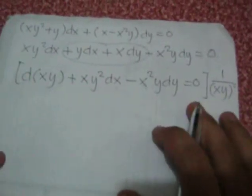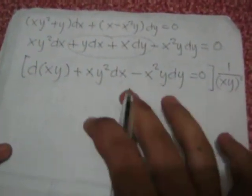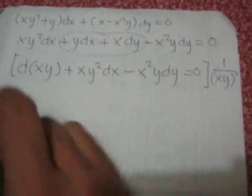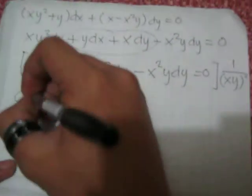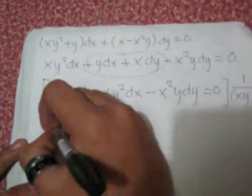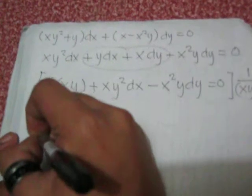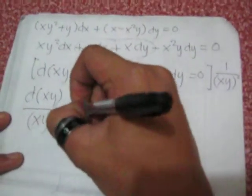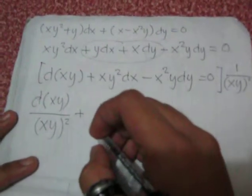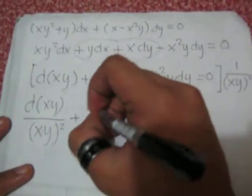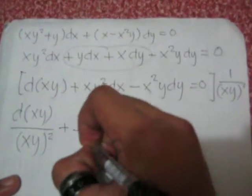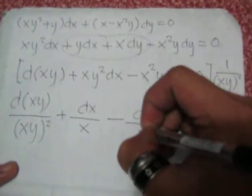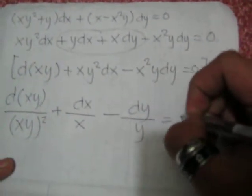Now, simplifying the equation by distributing the integrating factor to the differential equation, we can write d(xy)/(xy)² + dx/x - dy/y = 0.